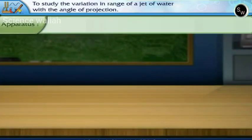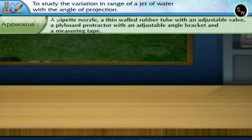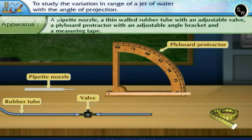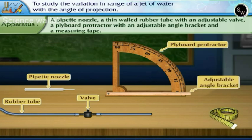The apparatus we require for this activity is a pipette nozzle, a thin walled rubber tube with an adjustable valve, a plywood protractor with an adjustable angle bracket, and a measuring tape.